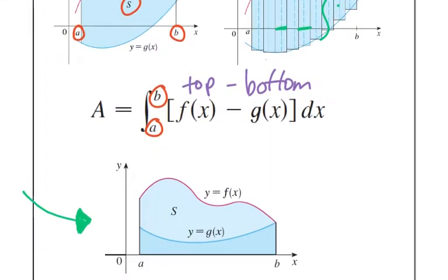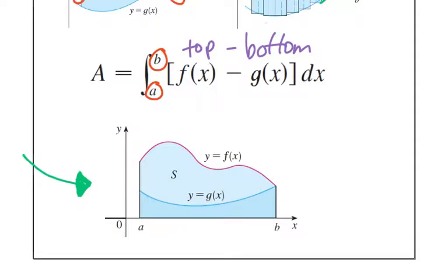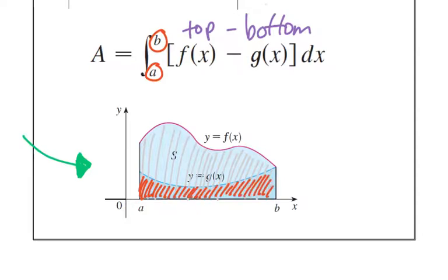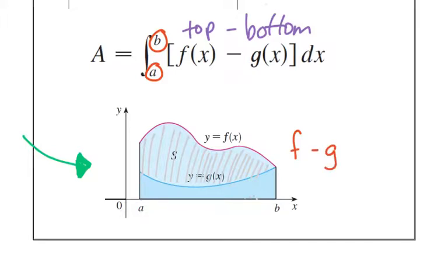But why does that work? Let's say f of x is the red curve and g of x is the blue curve. The area under f of x is the whole area from f of x all the way down to the x-axis. The area of g of x is from g of x down to the x-axis. So if I take the area of f of x and subtract the area of g of x — taking the entire gray and subtracting the red — I get the area between f and g. That's why you take the top curve minus the bottom curve. Just remember: integral of top minus bottom.